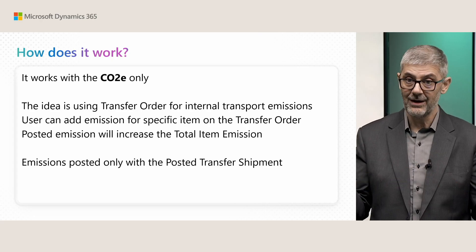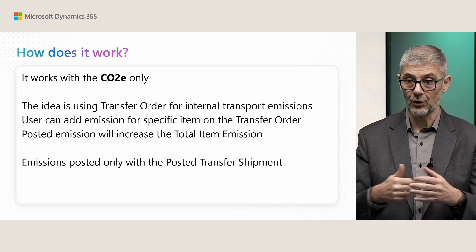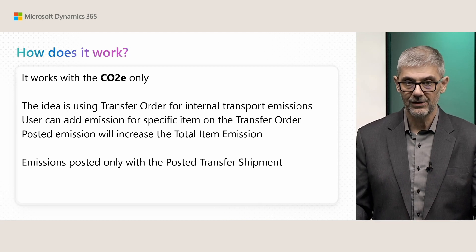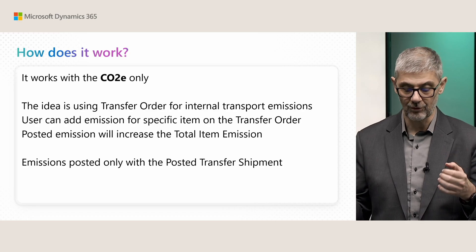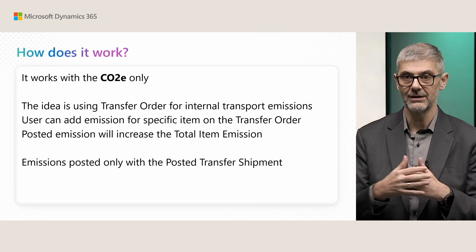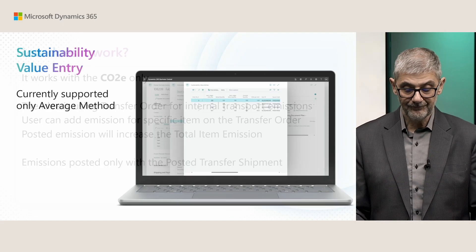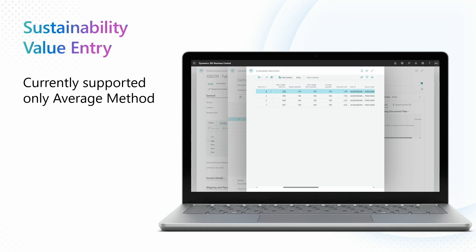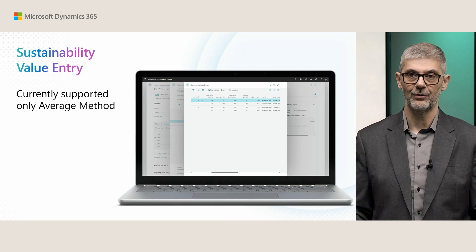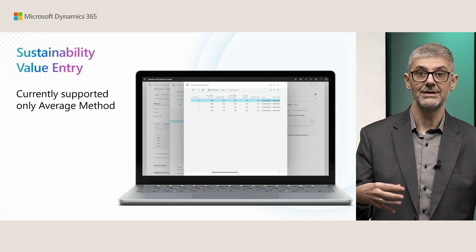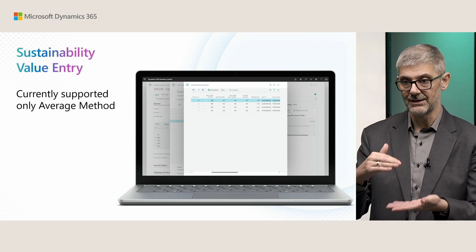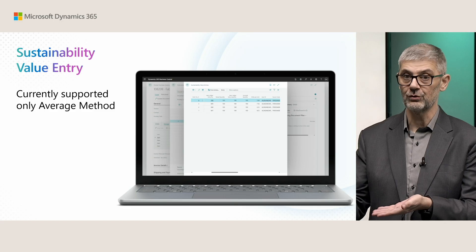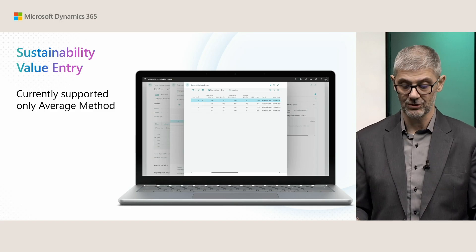So emission per item works the same way as we work with costs and accounts. When you post, you will get emissions information only in the posted transfer shipment, not in both posted documents — so only in the transfer shipment. When you post, you will get a sustainability value entry with all details, very similar to standard value entries. What is different is that in this moment we are limited to the average method only. In the future, based on your feedback, we may extend to different methods.